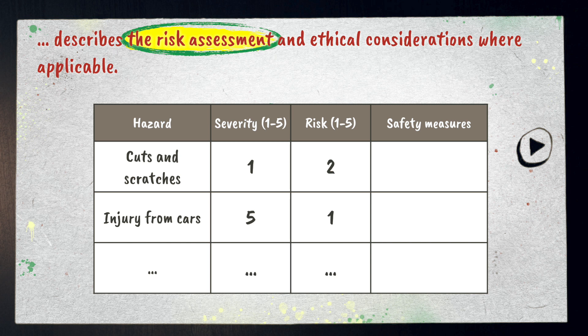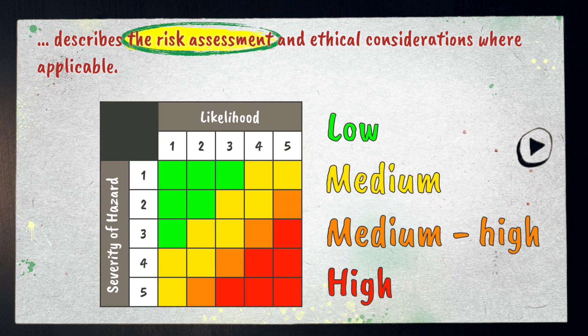For cuts and scratches, we can't really reduce the risk, but since the severity is low, just having a first aid kit available is fine. To minimize the risk of injuries from cars, a sensible measure is to wear a high-visibility vest — with this measure in place, the risk remains relatively low. There are lots of versions of this matrix out there, and I'd recommend using a standardized version. Your school might even have one they use for field trips, so ask your teacher.